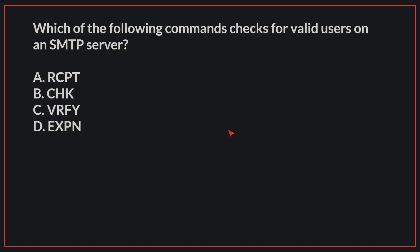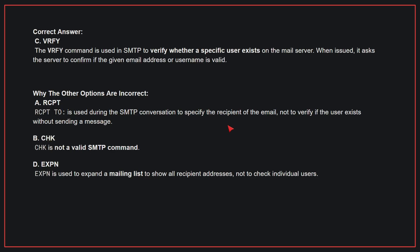Which of the following commands checks for valid users on an SMTP server? The correct answer is C: VRFY. The VRFY command is used in SMTP to verify whether a specific user exists on the mail server. When issued, it asks the server to confirm if the given email address or username is valid. Why the other options are incorrect? A: RCPT TO is used during the SMTP conversation to specify the recipient of the email, not to verify if the user exists without sending a message. B: CHK is not a valid SMTP command. D: EXPN is used to expand a mailing list to show all recipient addresses, not to check individual users.